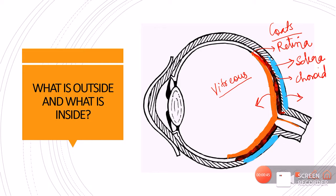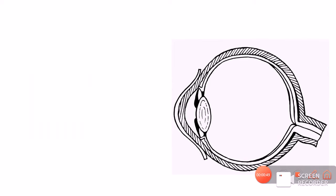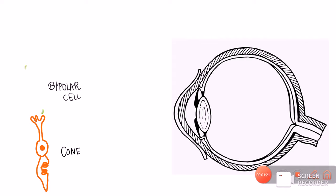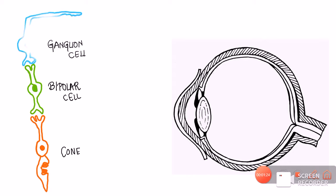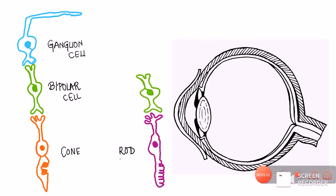This retina is divided into about 10 layers. Before we understand those layers, it is important to know about the three key cells present in the retina. The first is the cone, which is a photoreceptor concerned with color vision. The other photoreceptor is the rod, concerned with night vision. The cones relay with the bipolar cells, and then the bipolar cells relay with the ganglion cells. Similarly, the rods also relay with bipolar cells, which again relay into the ganglion cell.